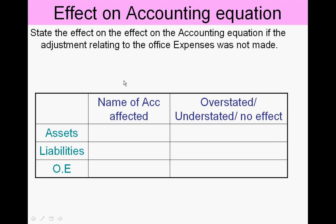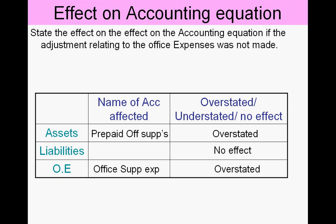If we neglected to make the adjustment, our assets would be overstated because prepaid office supplies would be $550 too high. There's no effect on liabilities since GST has already been dealt with, but owner's equity is also overstated because we've neglected to record an expense — expenses are understated, profit is overstated. Both sides of the accounting equation are overstated by $550.